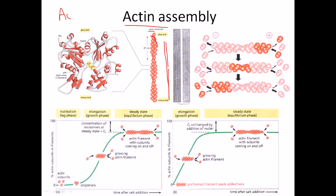The actin filament is not a straight structure but slightly twisted, and you can see that twisting if you track the movement through the whole structure. If you zoom into a particular actin protein, you can find a structure where several regions are made up of alpha helices and several regions are made up of beta sheets, joined together via loops.